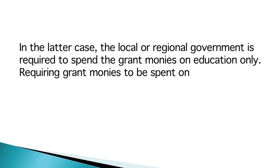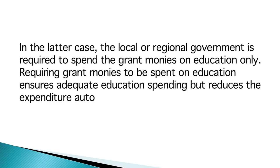Requiring grant money to be spent on education ensures adequate education spending but reduces the expenditure autonomy of the local or regional government. Once a decision is made to transfer money to lower levels of government, a further decision needs to be made as to how to determine what amount of money should be transferred to each receiving government. The basic choice is whether to negotiate that amount between governments or to determine the amount using a capitation formula. Negotiation has political advantages in that it allows central government to reward their political allies, and thus it is often popular. Capitation formulas, however, are more equitable and may also provide incentives for educational performance, since local governments receive more revenues if more students are enrolled and attending regularly, encouraging campaigns to keep children in school.